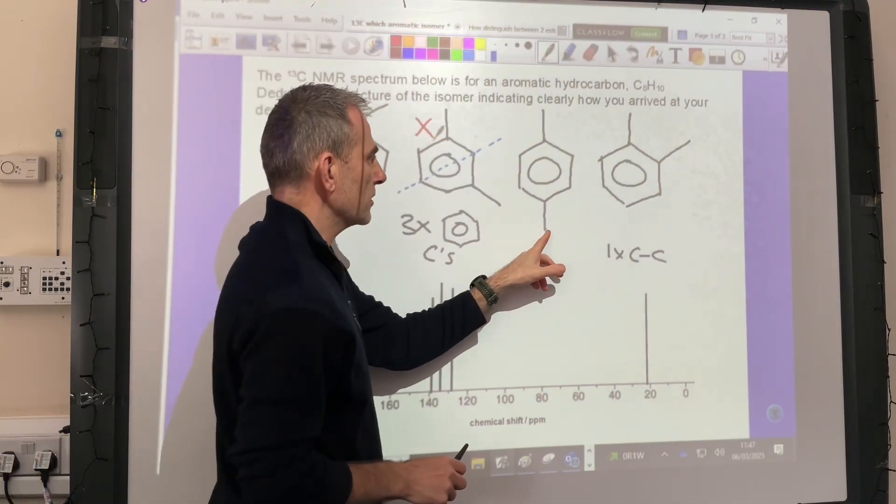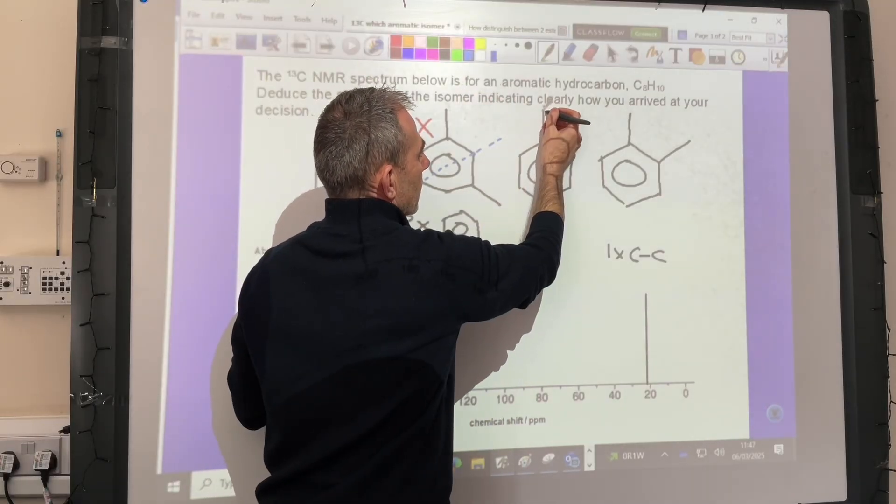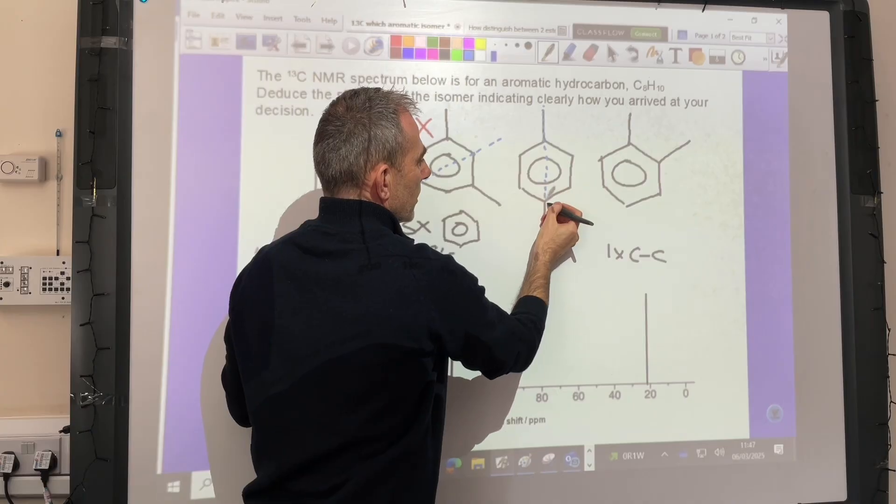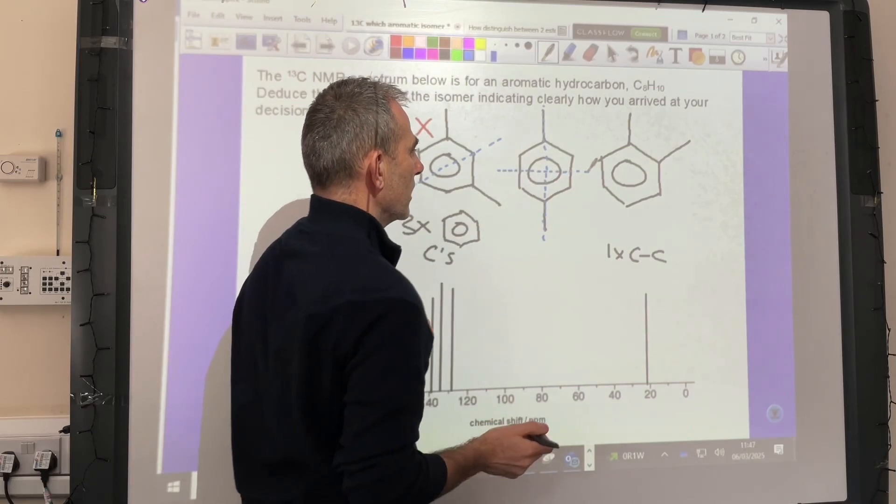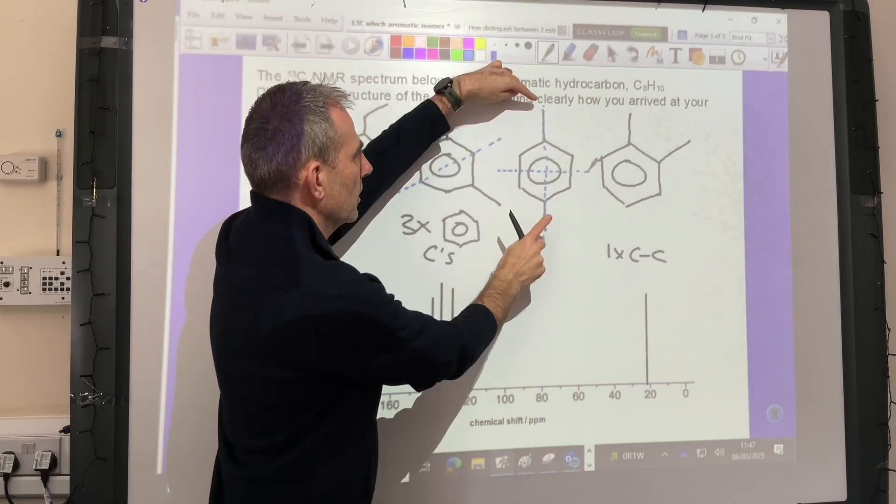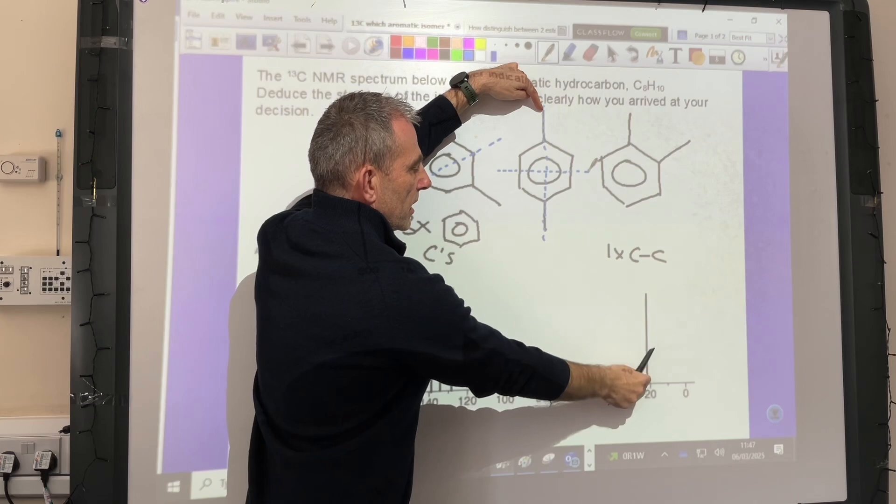Moving on to this one. Again, looking for symmetry, we've definitely got a line of symmetry right down the middle there, and we've got another one across the middle there. These two carbons are equivalent, so you would get one peak here. So far so good.